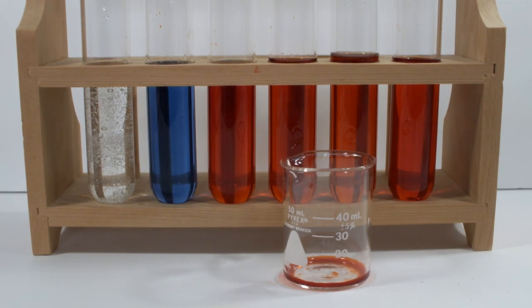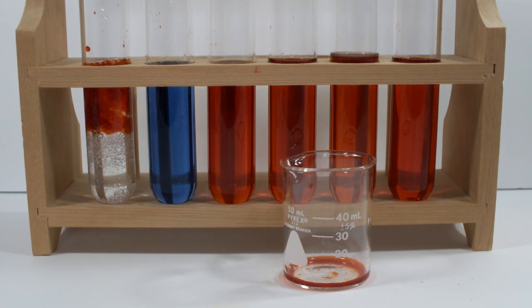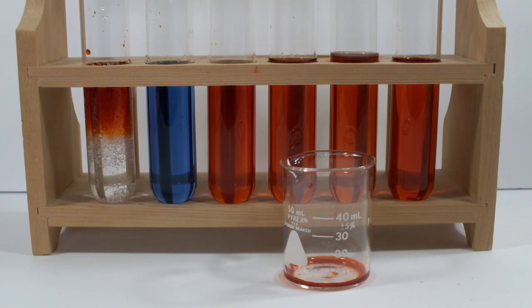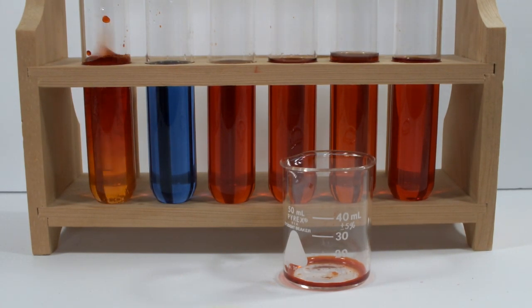Well, as you can see from the beaker, that brings us to the end of the ferroin solution. This last tube is 35% hydrogen peroxide, which I'm assuming is going to have the same reaction as the nitric acid did.